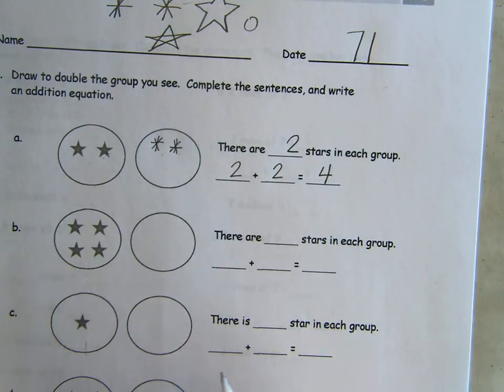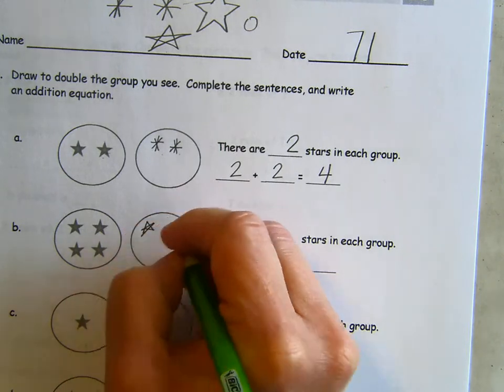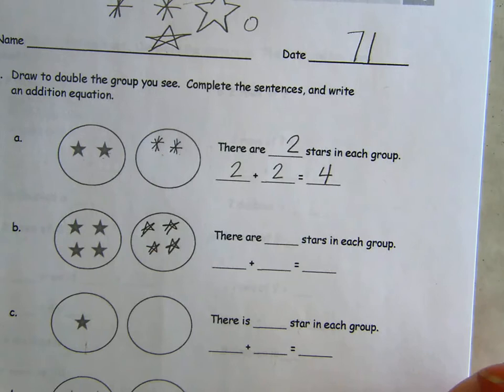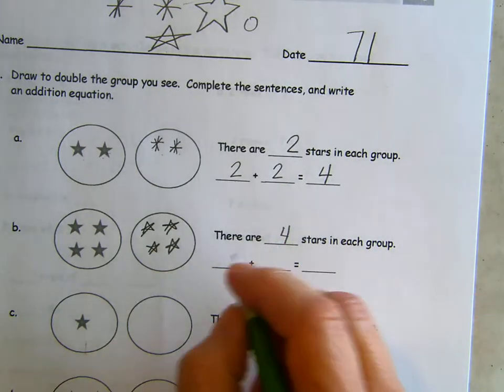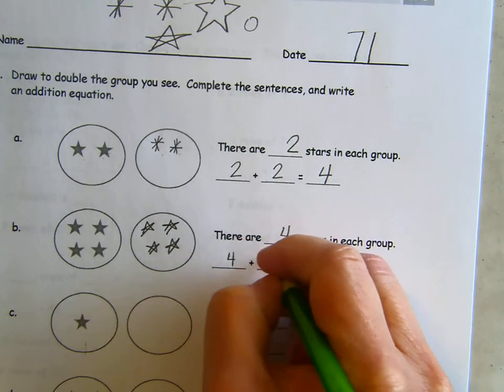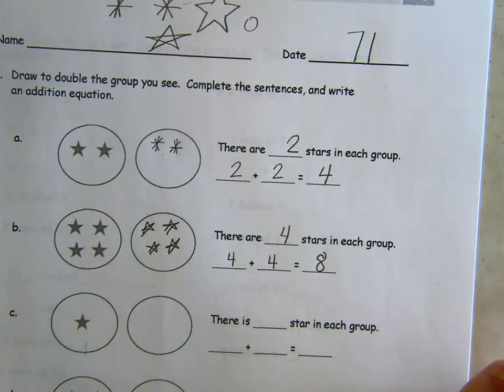Here we have four stars. So I'm going to start doing the easy, super easy way. One, two, three, four. So there are four stars in each group. What's the doubles fact then? Four plus four is eight.